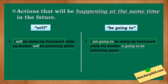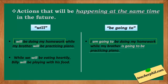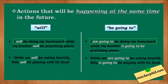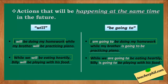That's why both of them are in their future progressive forms. Another example: 'While we will be eating heartily, Billy will be playing with his food.' Or: 'While we are going to be eating heartily, Billy is going to be playing with his food.' Both actions will happen at the same time, so both are also in their future progressive forms.